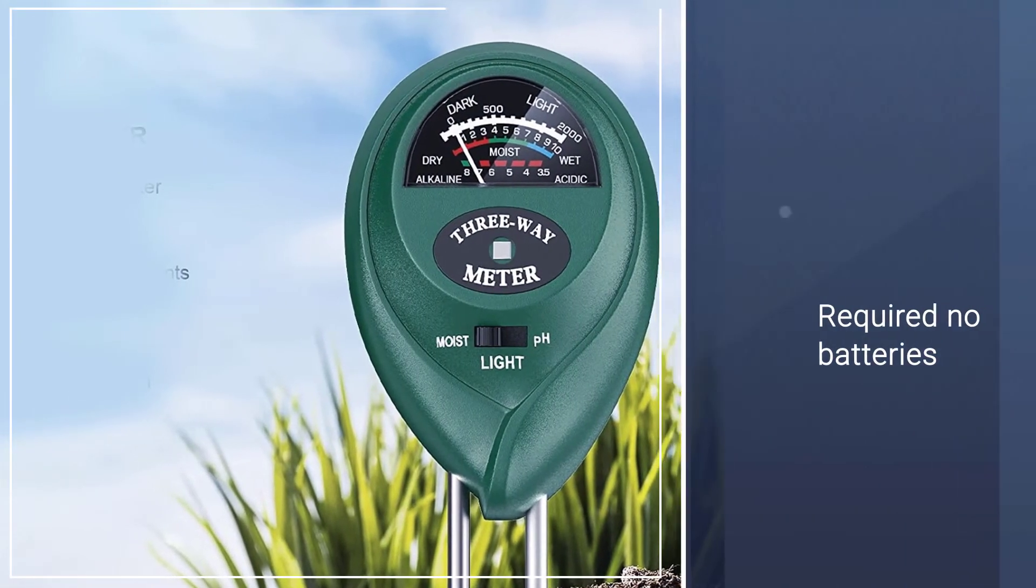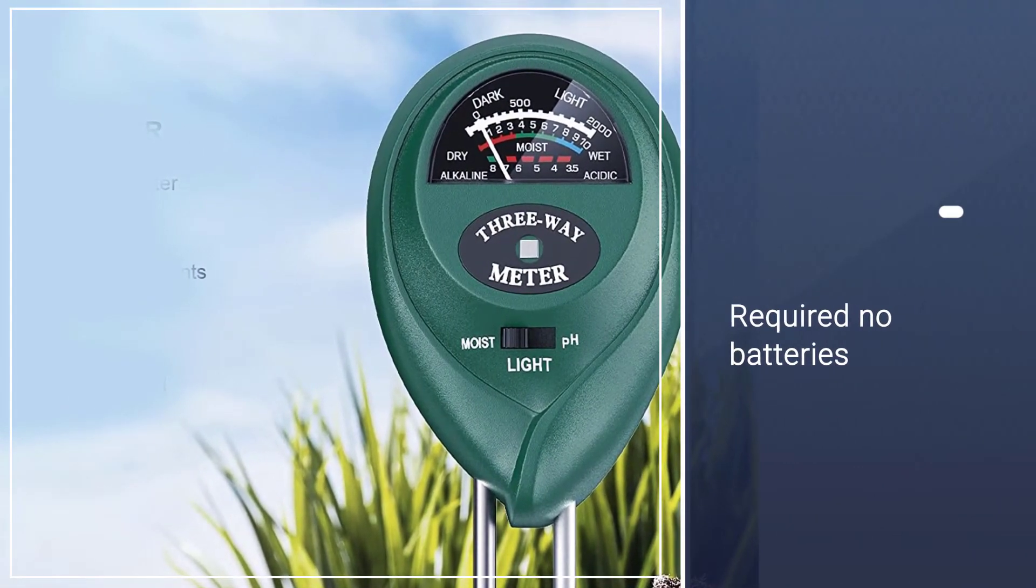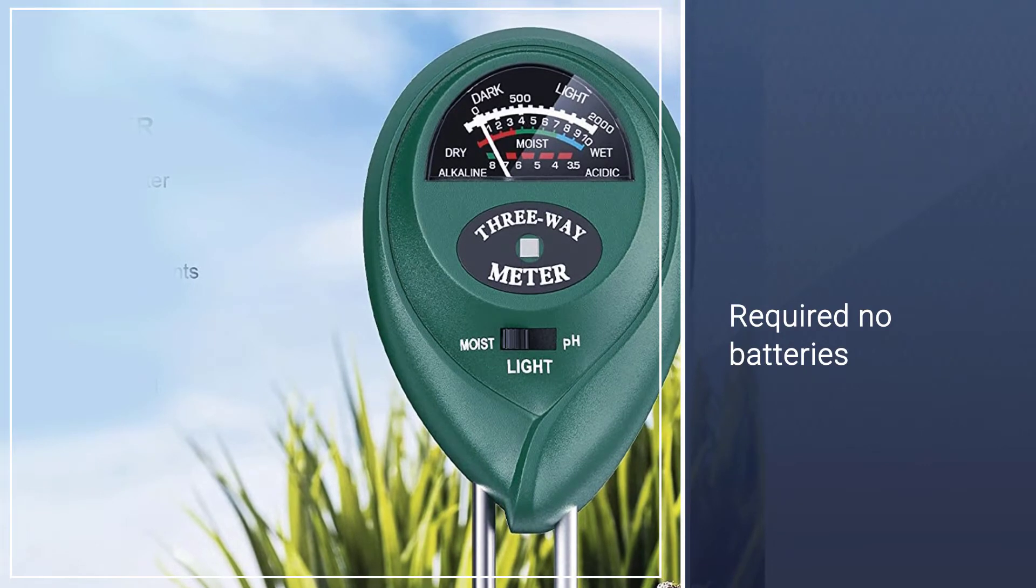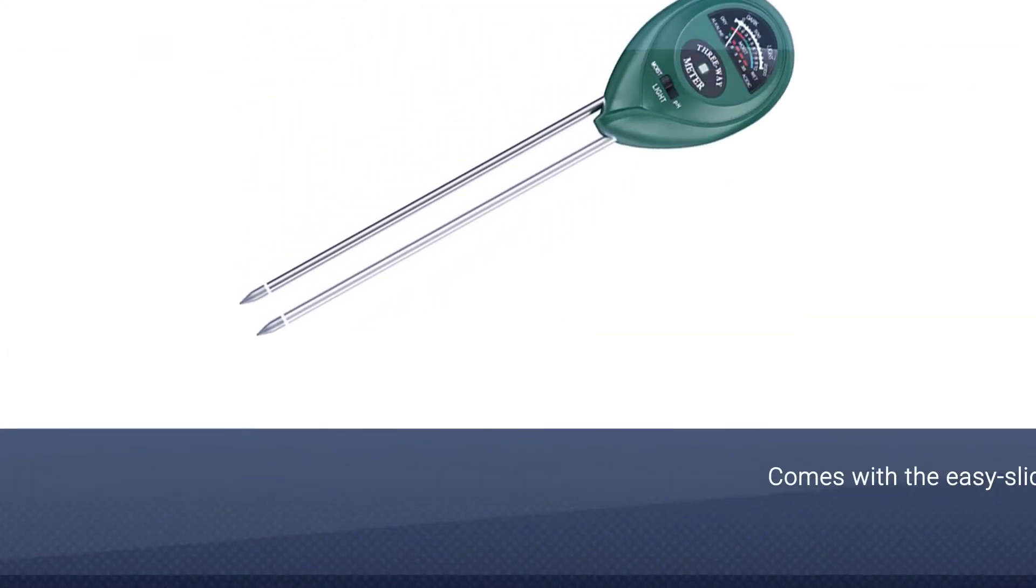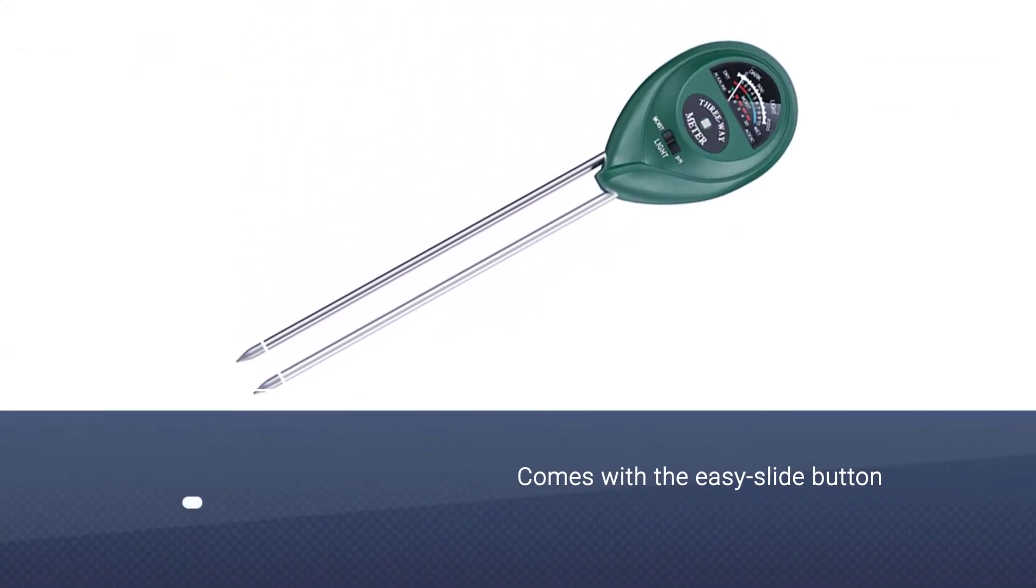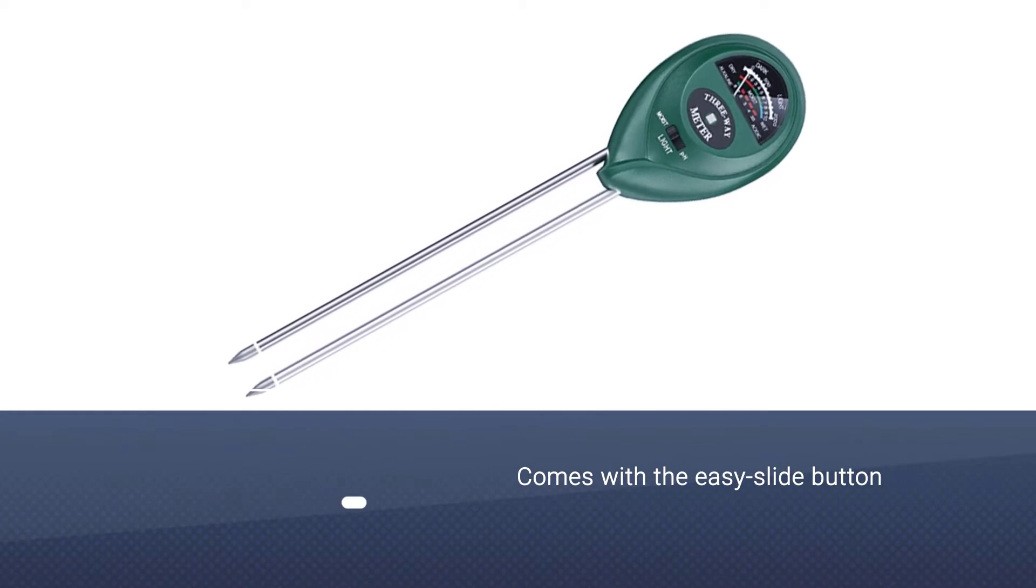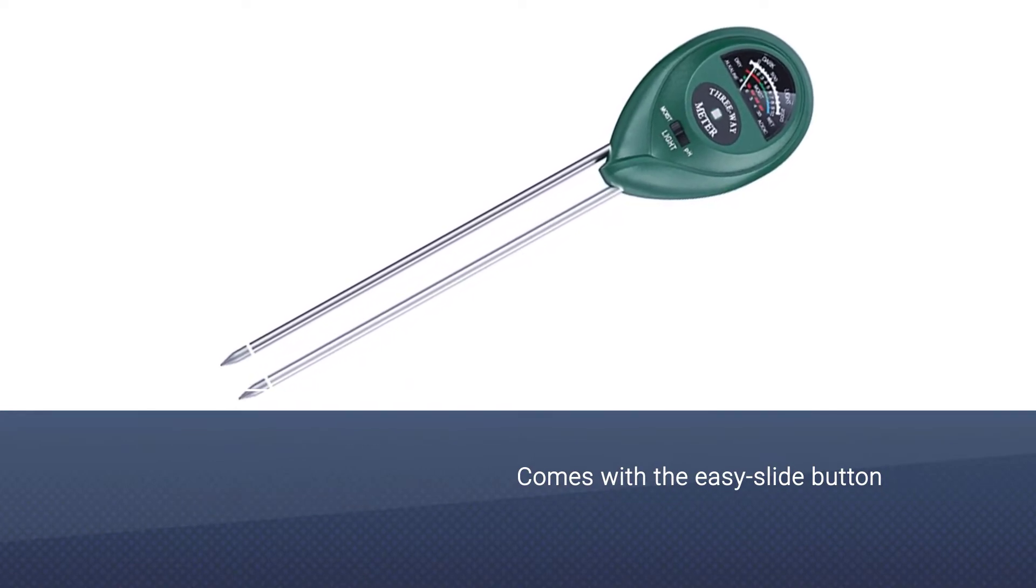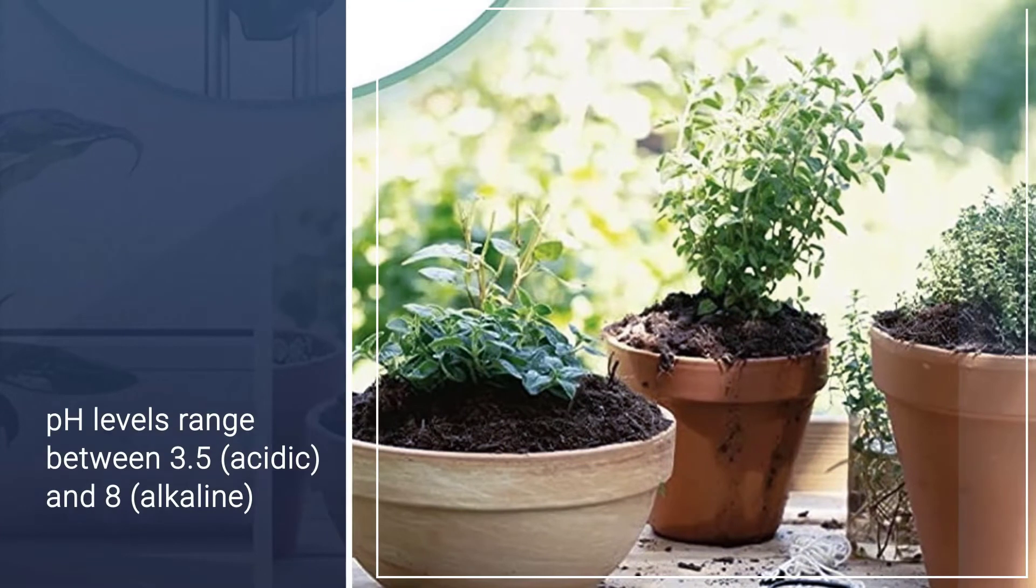Select the mode you want to test—pH, moisture, or light—with the easy slide button. pH levels range between 3.5 acidic and 8 alkaline. Moisture levels range from 1 to 10: 1-3 red dry, 4-7 green moisture, and 8-10 blue wet.